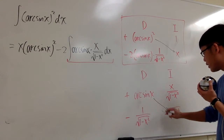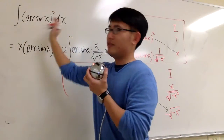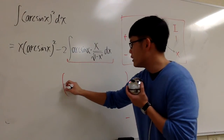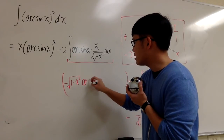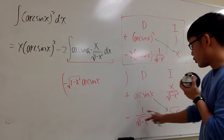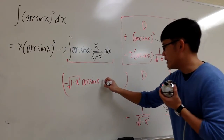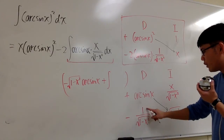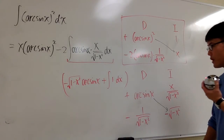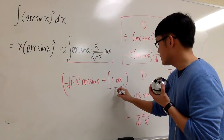To construct the answer, it's the product of the diagonal. The diagonal gives arcsin x times negative square root of 1 minus x squared. Then the row product — negative times negative — becomes a positive integral of 1 over square root of 1 minus x squared times negative square root of 1 minus x squared. Luckily those cancel, leaving just the integral of 1, which is x.